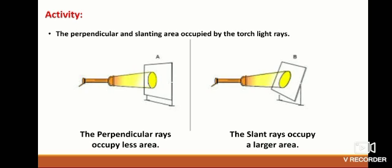The perpendicular rays occupy less area. The part where the rays occupy lesser area receives bright sunlight and more heat. Thus, that surface gets heated more and the air there becomes hotter.